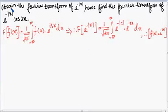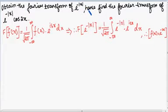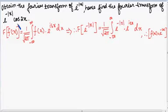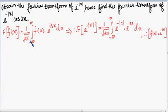Students, you have been given a problem to obtain the Fourier transform of e^(-|x|), and hence find the Fourier transform of e^(-|x|)·cos(2x). We know that the Fourier transform of f(x) is given as 1 divided by square root of 2π, integration from minus infinity to plus infinity of f(x) · e^(isx) dx.